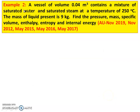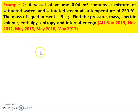Example number 2. A vessel of volume 0.04 m³ contains a mixture of saturated water and saturated steam at a temperature of 250°C. The mass of the liquid present is 9 kg. Find the pressure, mass, specific volume, enthalpy, entropy, and internal energy. This problem has appeared in November 2019, November 2012, May 2015, May 2016, and May 2017 question papers — it is an important problem.